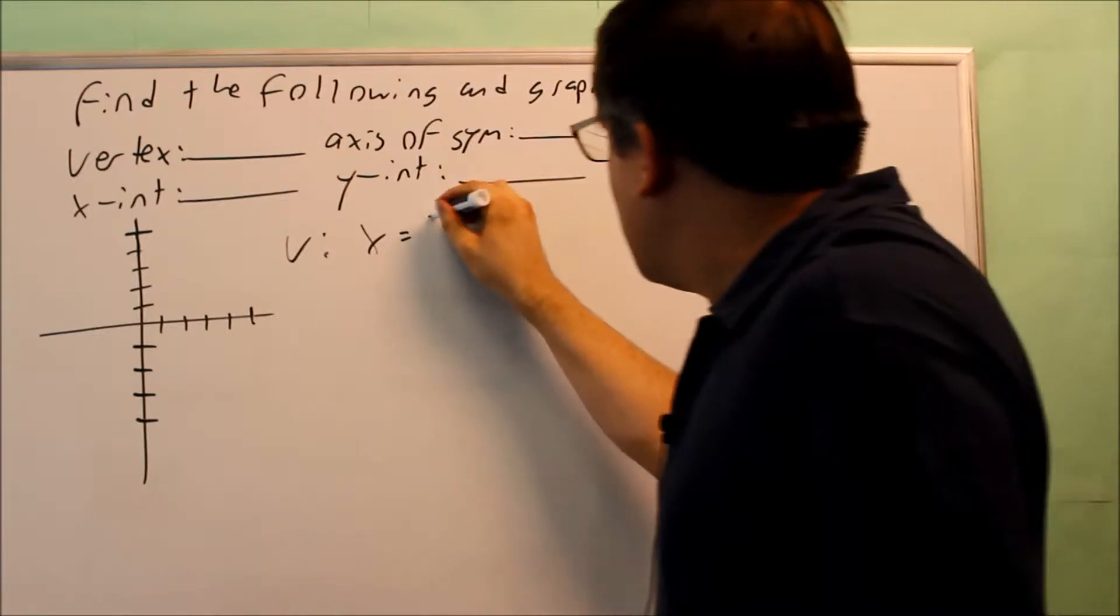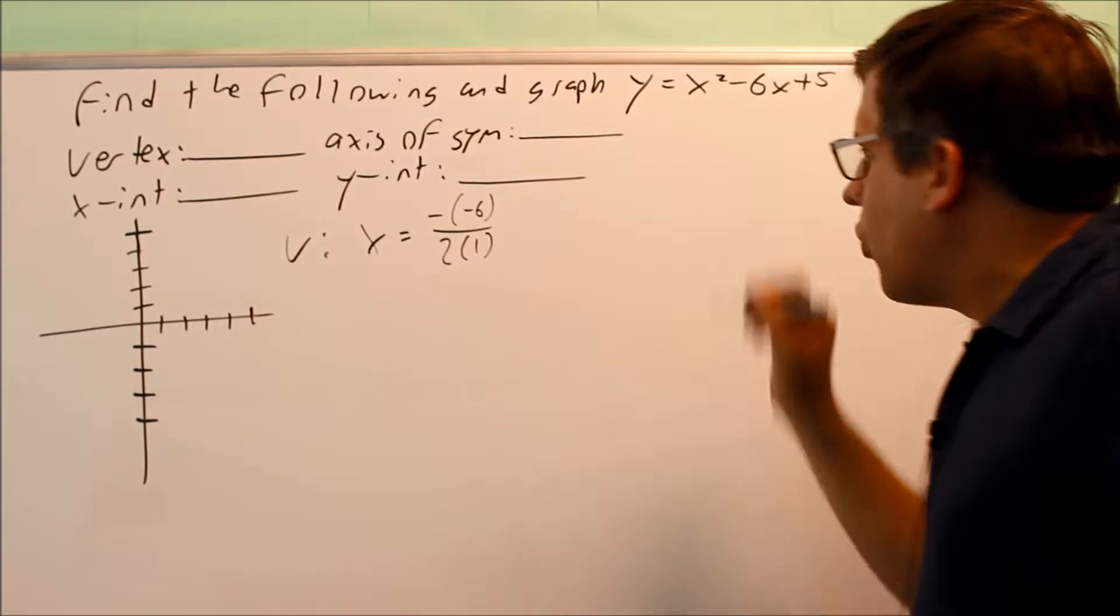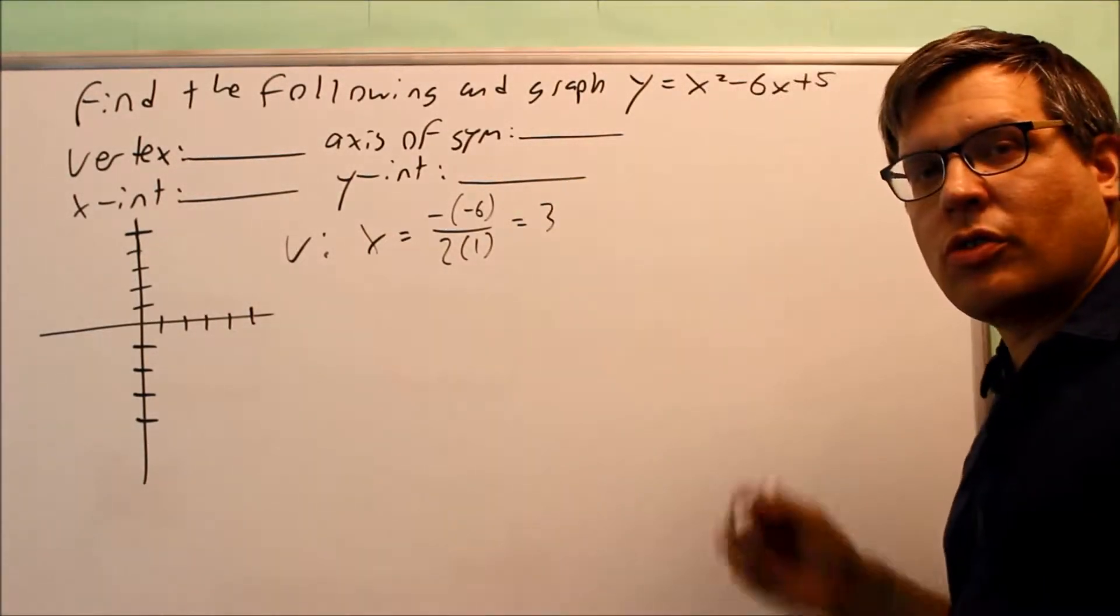That's going to be negative and negative 6 over 2 times a. In this case, there's a 1 in front of there. And when you simplify that, you're going to get x equals 3.